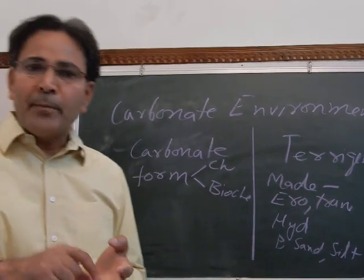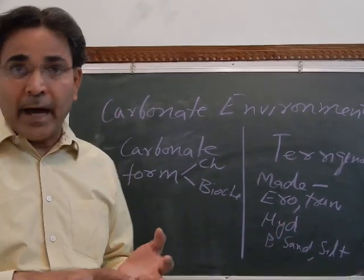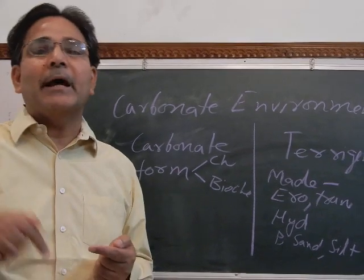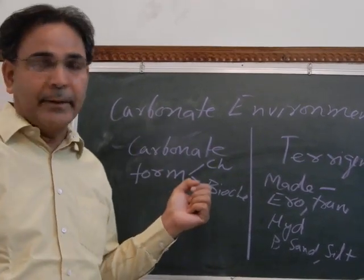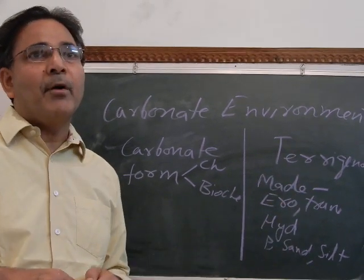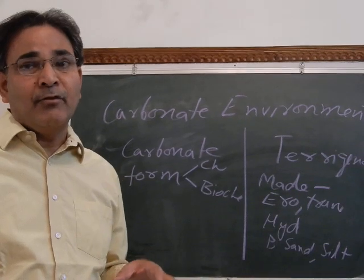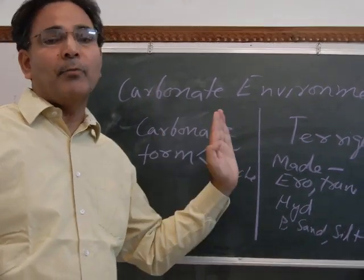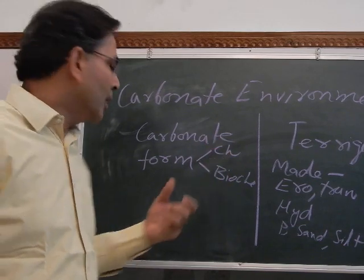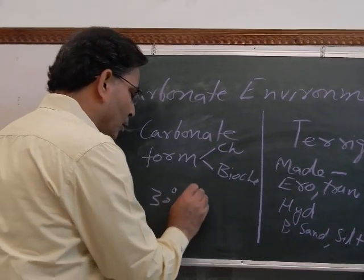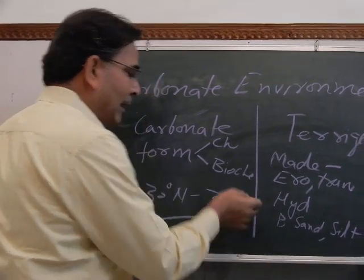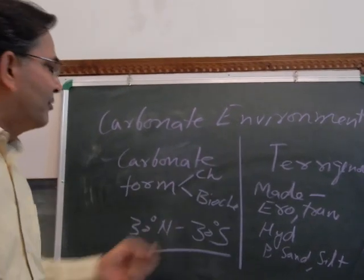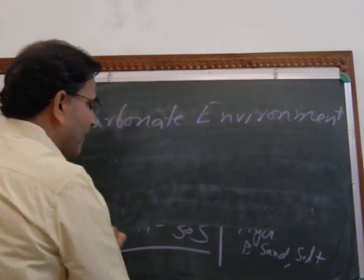Pterigenous sediments are formed in any type of environment — marine or non-marine — and in cold water as well as warm water. Whereas carbonate sediments are formed only in the marine environment, specifically in the siliciclastic marine environment, and they are generally formed in clear and warm water — generally between 30 degrees north to 30 degrees south latitude.